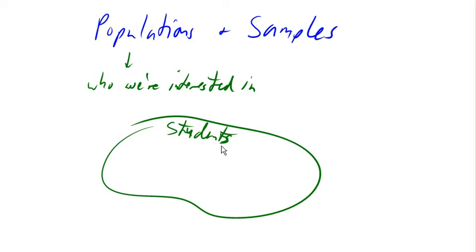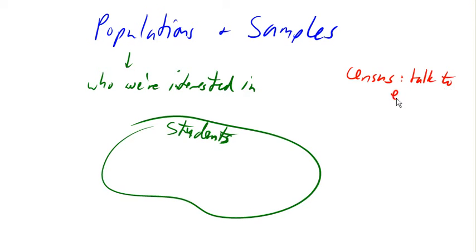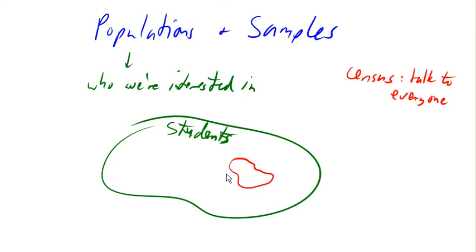Usually, if we are doing an experiment or a poll, we really can't afford to talk to everyone. If we could, then we would be doing a census — that's where we talk to everyone. You've probably heard of the census before, because the U.S. does one every ten years to figure out how many people there are. Obviously, that's really expensive, so very rarely do we do this. Usually we talk to a small group of the population, and that's called the sample — the sample is who we pick from the big population to actually talk to and study.